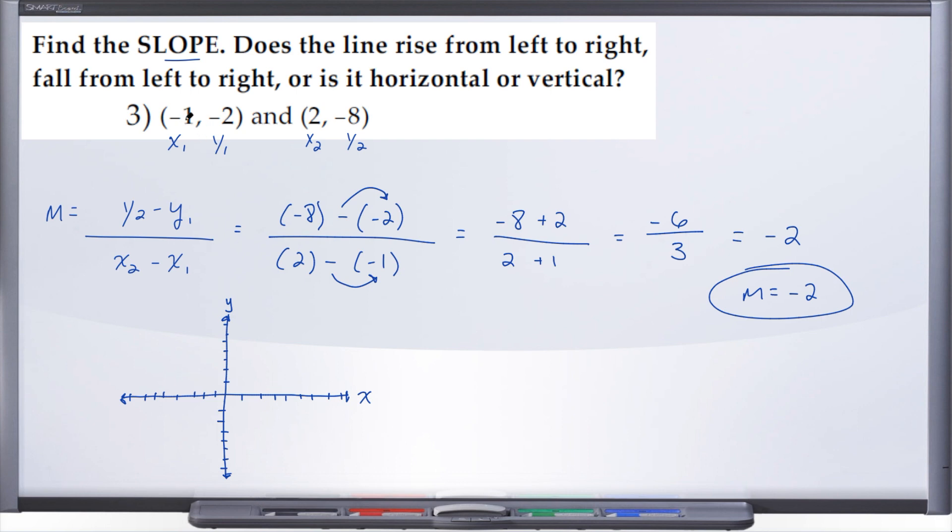All right, so let's go ahead and plot each of these points. So negative 1, negative 2, so negative 1, negative 2, and positive 2, negative 8. So positive 2, negative 8, way down here. And we can go ahead and connect these two points. And so here we have a line.